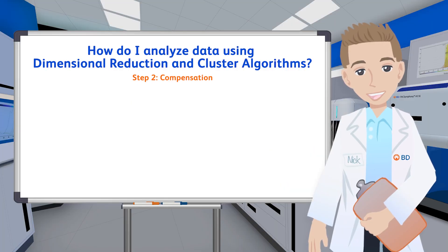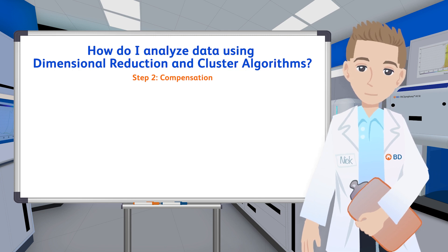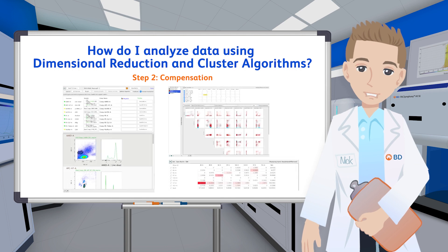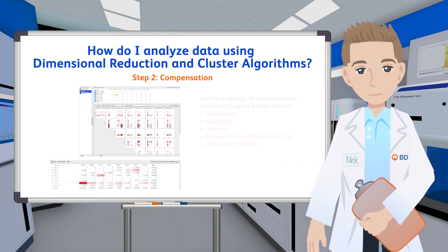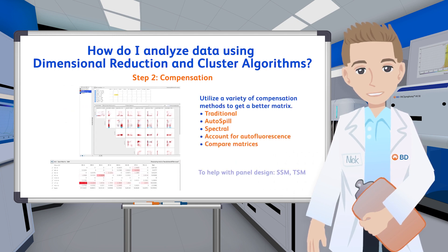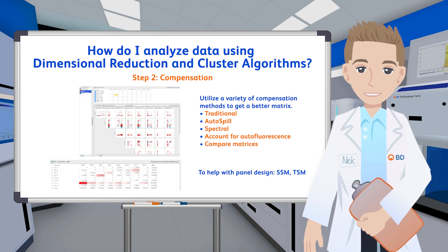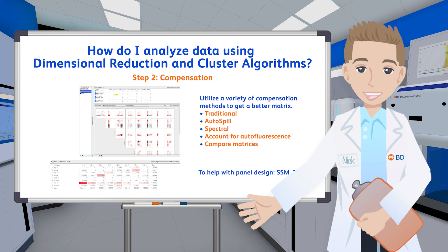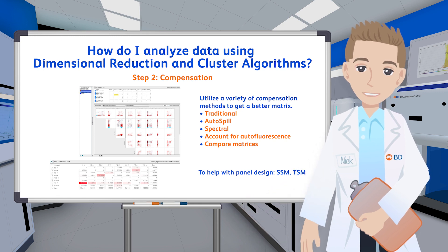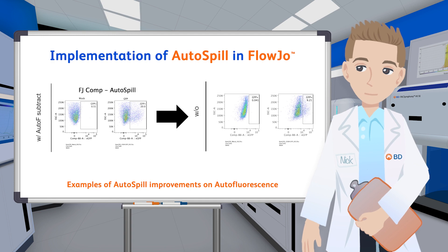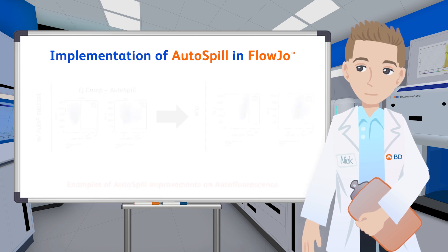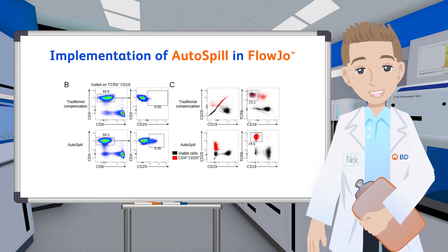The second step is Compensation. It's an absolutely key part of any high-dimensional analysis. As we add more markers, the complexity of our panel threatens to become unwieldy. The Compensation platform built into FlowJo is quite flexible, permitting spectral unmixing with or without a whitening channel. You can also choose between the traditional method of compensation or the newer Autospill/Autospread method, which has the advantage of being able to subtract out autofluorescence. You can even compare matrices using various methods to determine which one works best.